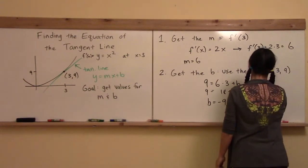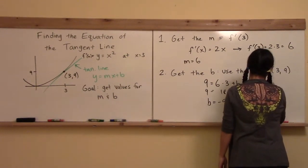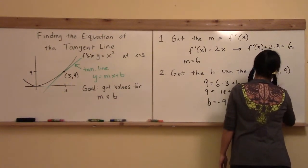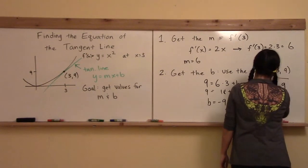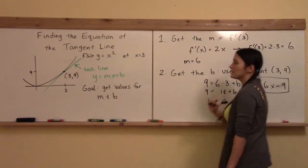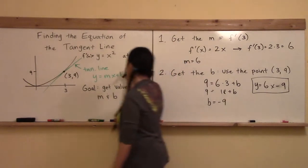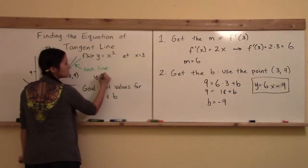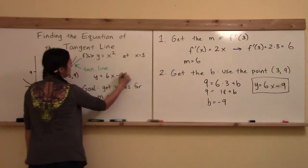And then my overall conclusion is that the equation of the tangent line is y is equal to 6x minus 9. That's the answer I'm going to box if somebody asks me for the equation of the tangent line. So I just got it. y is equal to 6x minus 9.